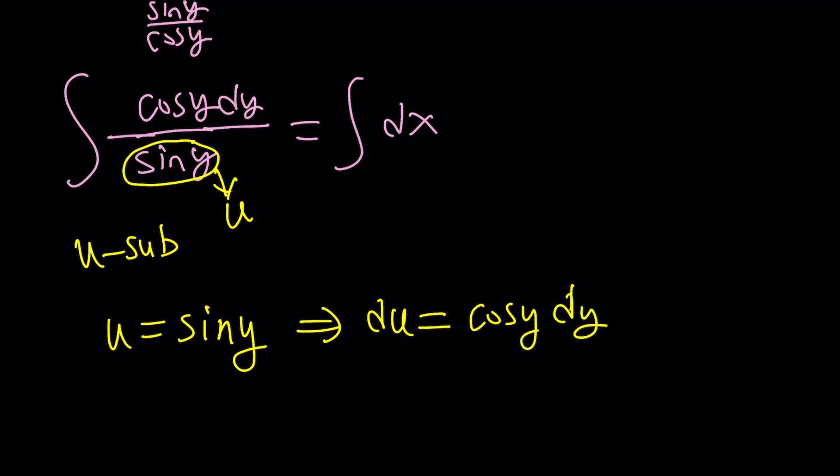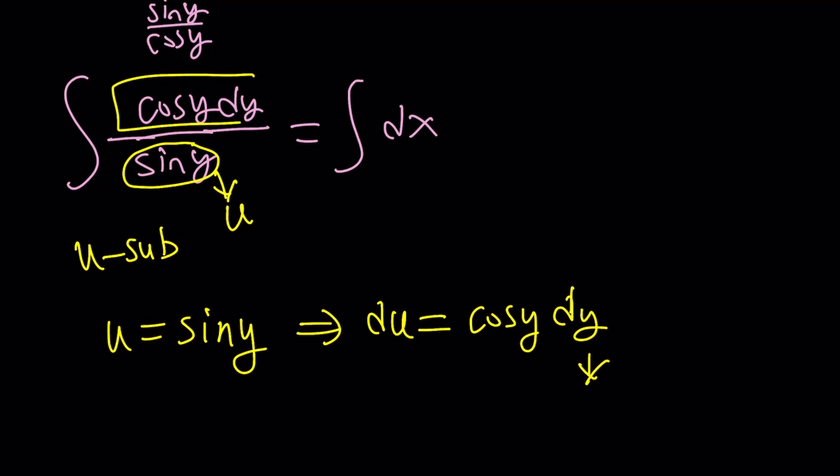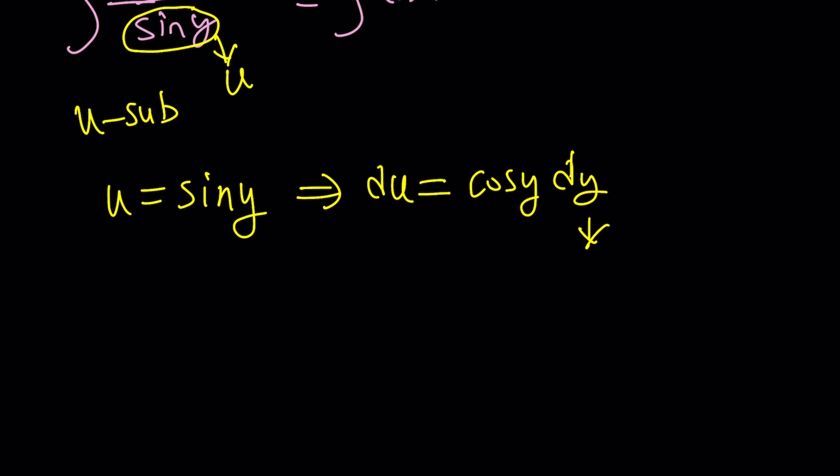If you really like it, we'll do it. So if u equals sine y, then du is just the derivative of sine y, which is cosine y dy. Now you might be saying, aren't you supposed to multiply by y prime? Yes, this is kind of y prime. If you divide both sides by dx, you'll get u prime and y prime. Cool. So that's du.